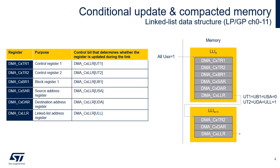The CX LLR register contains control bits that enable the user to select which registers of the channel X linked list register file will be updated during the link. In the example on the right, it is assumed that only the CX TR2, CX DAR, and CX LLR registers will be updated when linking from LLIN to LLIN plus 1. Control bits related to registers that are not updated are cleared — these are UT1, UB1, and USA.